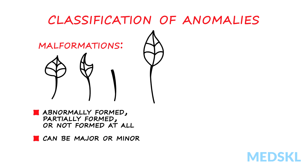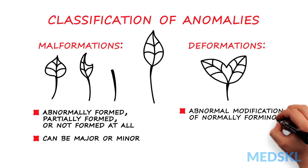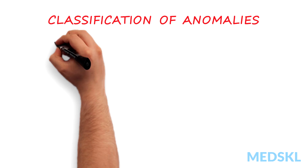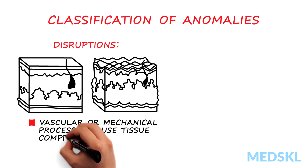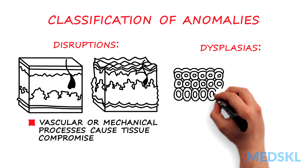Deformation is the abnormal modification of a normally forming structure, usually due to intrauterine factors, such as decreased amniotic fluid. Disruptions are defects that occur due to vascular or mechanical processes causing tissue compromise in an otherwise normally developing structure. Dysplasias are tissue malformations due to intrinsic abnormalities at the level of cellular organization.